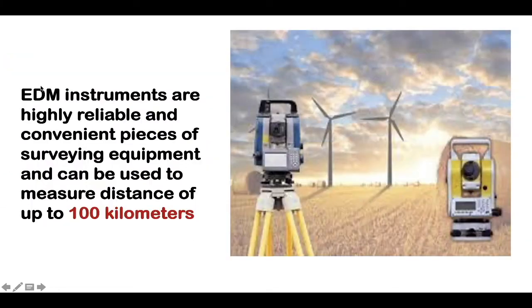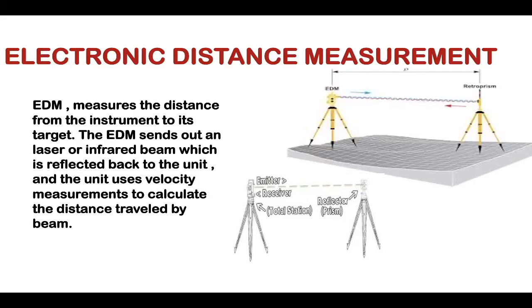EDM instruments are highly reliable and convenient and can be used to measure distances up to 100 kilometers. To simplify procedures in field work and obtain accuracy in surveying, these electronic distance measuring methods were introduced. The distance is measured with the help of an EDM and a reflector using electromagnetic waves such as microwaves, infrared waves, and other similar waves.